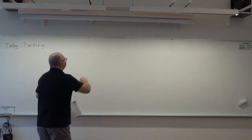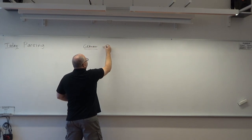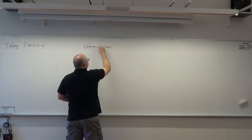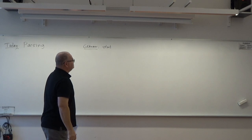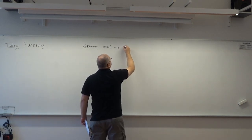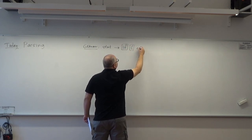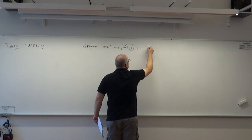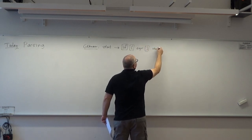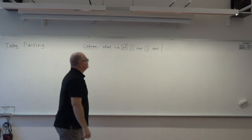A grammar can have rules like: a statement in a programming language could be an if token, a left parenthesis, then an expression, a right parenthesis, and another statement. And obviously you can have more statements than just this.